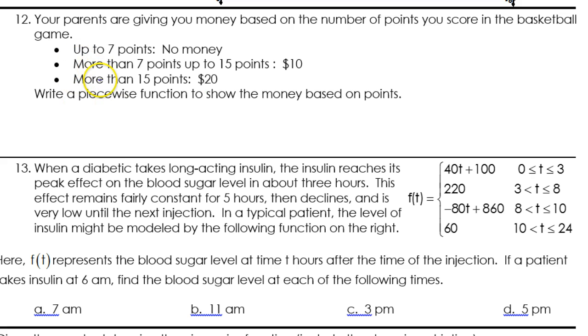Number 12 is super simple. Your parents are giving you money based on the number of points you score in the basketball game. Up to 7 points, you're not getting any money. So I'm going to make a money function, m of x. So we're just setting up our piecewise function like you do. So right now we're getting no money, that's $0, and the points are up to 7.